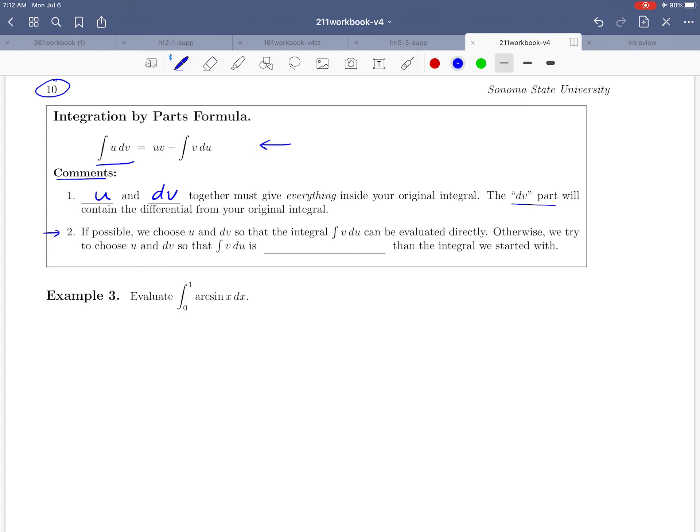And then the second comment. The idea of this is to take an integral that's difficult and then convert it into something that's easier. Ideally, we'd like the integral of vdu, that's the integral over on the right here, to be evaluated directly. Otherwise, the idea is to try to make that second integral easier than the one that we started with. We're hoping to get an easier integral.